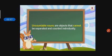Uncountable nouns are objects that cannot be separated and counted individually. You can't count them as one, two, three, four — you can't count uncountable nouns that way. You cannot separate them and count individually. Let me explain with some examples.